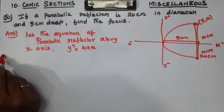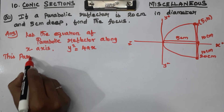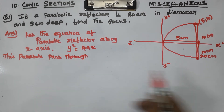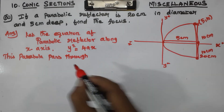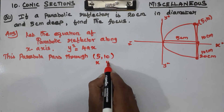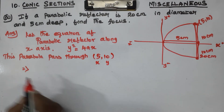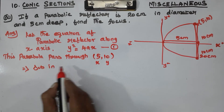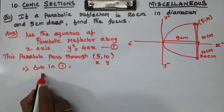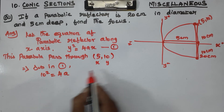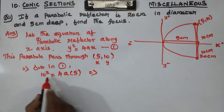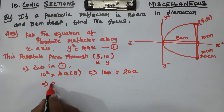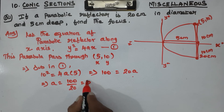This parabola passes through the point (5, 10), where x = 5 and y = 10. Substituting in equation: y² = 4ax gives 10² = 4a × 5, which implies 100 = 20a, which implies a = 100/20 = 5.